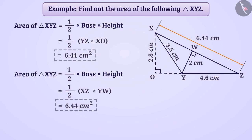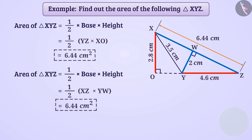Here, in both cases, we have considered different sides as the base and, by considering their corresponding perpendiculars, we have calculated the area. In both cases, we have got an equal answer. This is because in both cases we have taken the same triangle to find the area. If we consider any side of the triangle as the base and its corresponding perpendicular as the height, it will not change the area of the triangle.